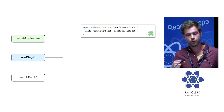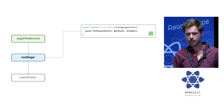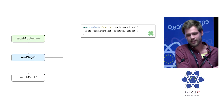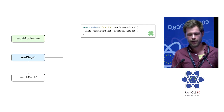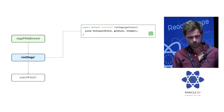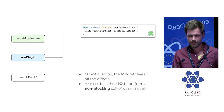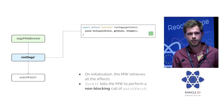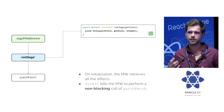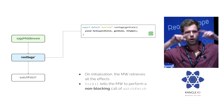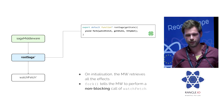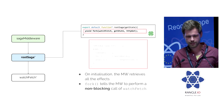The root saga yields a fork effect. The fork is provided by the Redux Saga library and describes: 'fork me a process called watchFetch', which receives state and an HTTP function to handle. When the store is initialized it calls the generator function, gets the first value, sees it's a fork, and makes the necessary callback wrapper to do what is described in the effect.